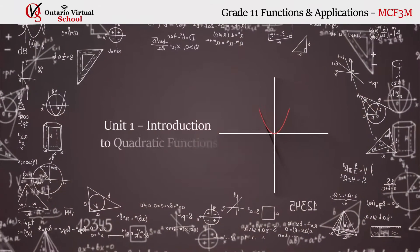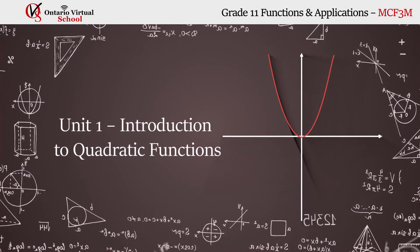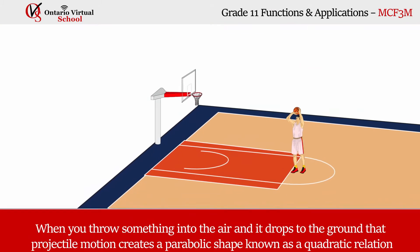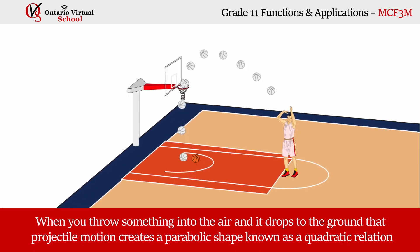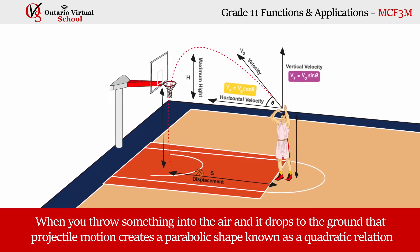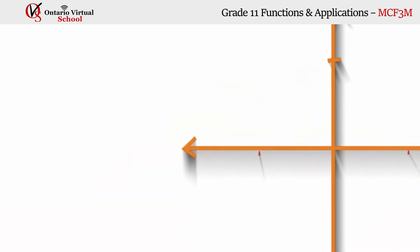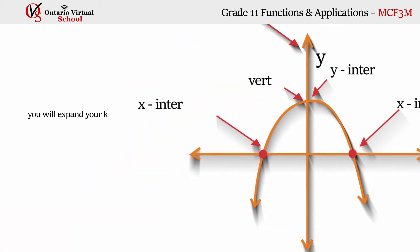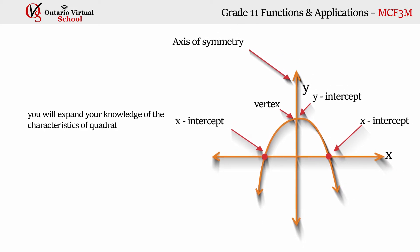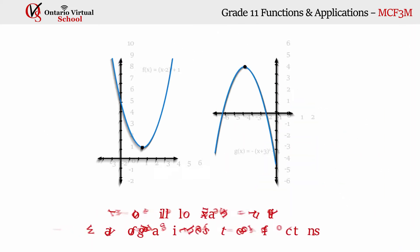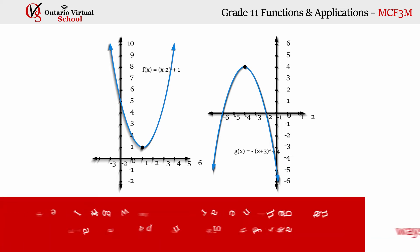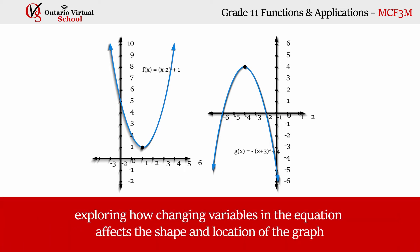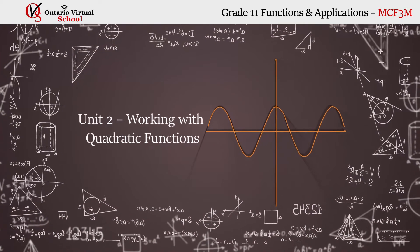Unit 1: Introduction to Quadratic Functions. When you throw something into the air and it drops to the ground, that projectile motion creates a parabolic shape known as a quadratic relation. In this unit you will expand your knowledge of the characteristics of quadratic relations from grade 10, and examine multiple ways of graphing these functions, exploring how changing variables in the equation affects the shape and location of the graph.